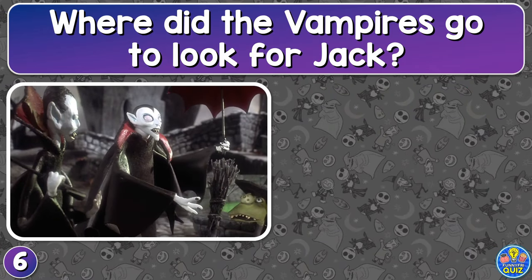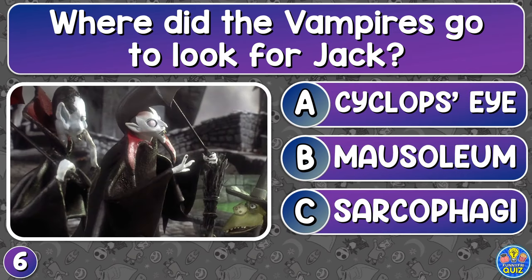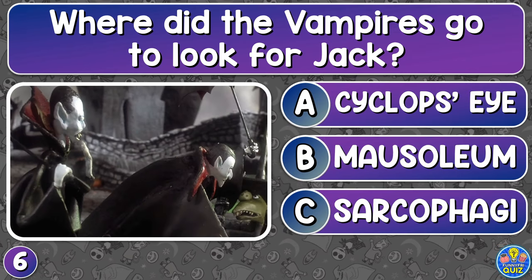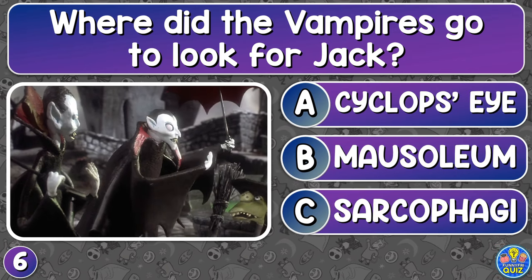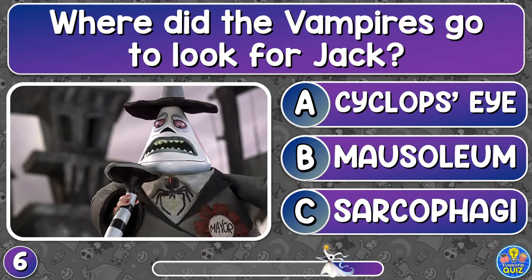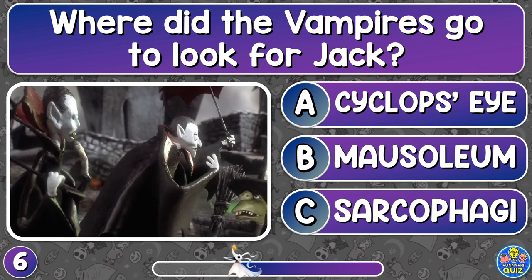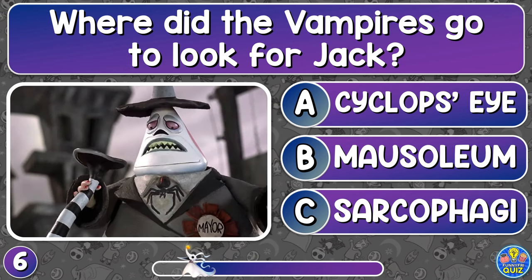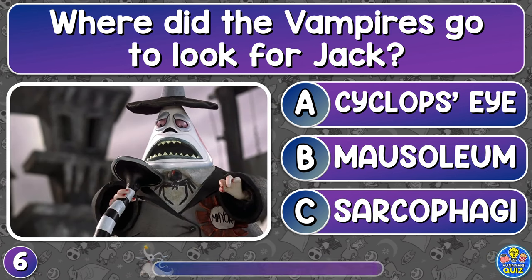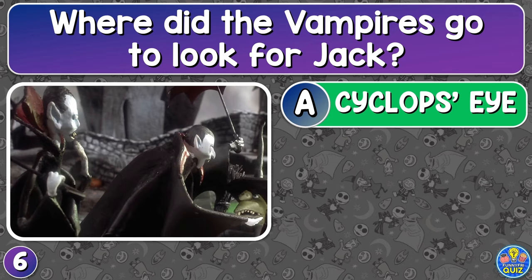Where did the vampires go to look for Jack? Cyclops' eye, mausoleum, or sarcophagus? Behind the cyclops' eye.